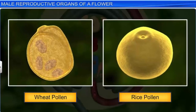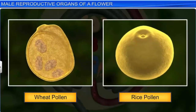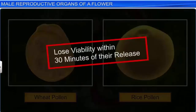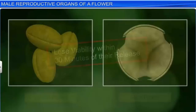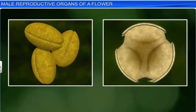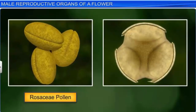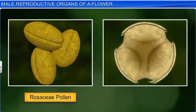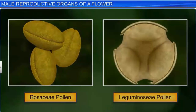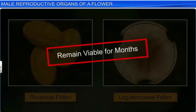Pollen grains of cereals such as wheat and rice lose their viability within 30 minutes of their release. Whereas pollen grains of some members of Rosaceae, Leguminaceae, and Solanaceae remain viable for months.